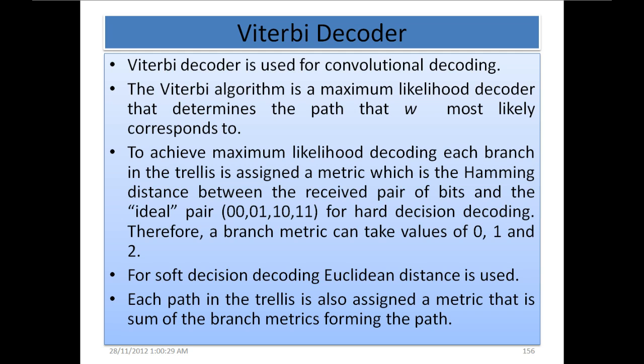Therefore, a branch metric can take values of 0, 1, and 2 in the case of a rate-2/1 (2,1,2) or 2-bit decoder. For soft decision decoding, Euclidean distance is used, which we are not going to discuss here.